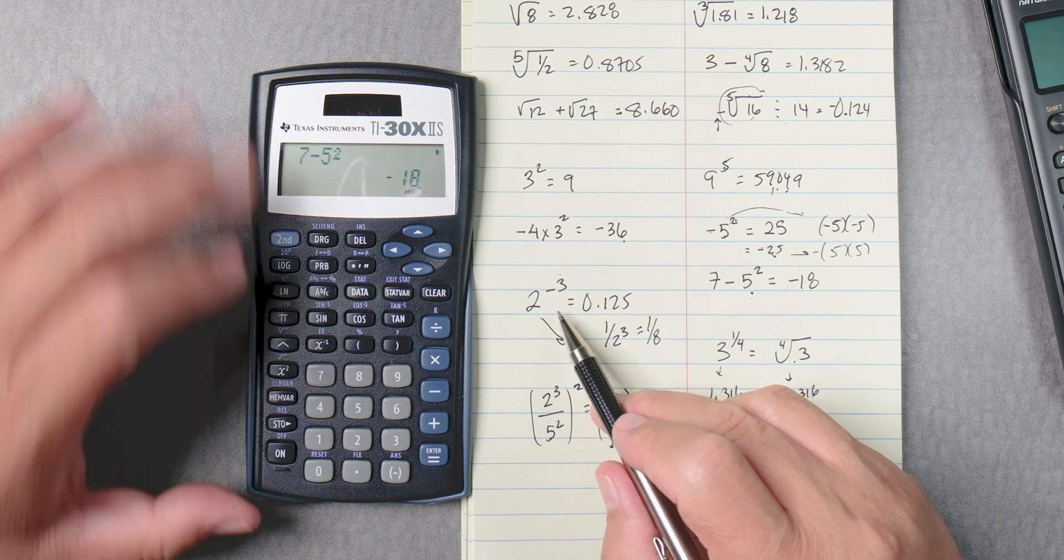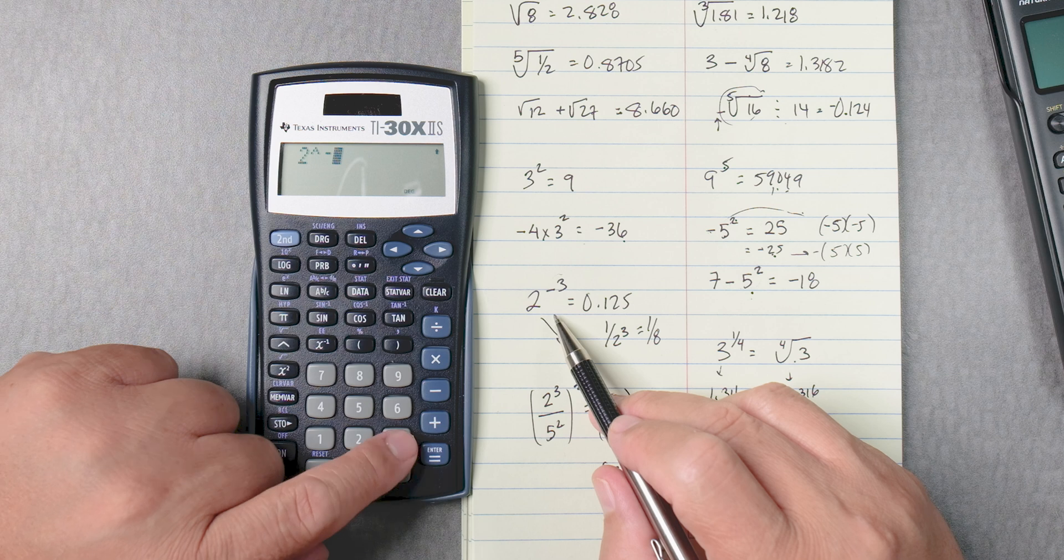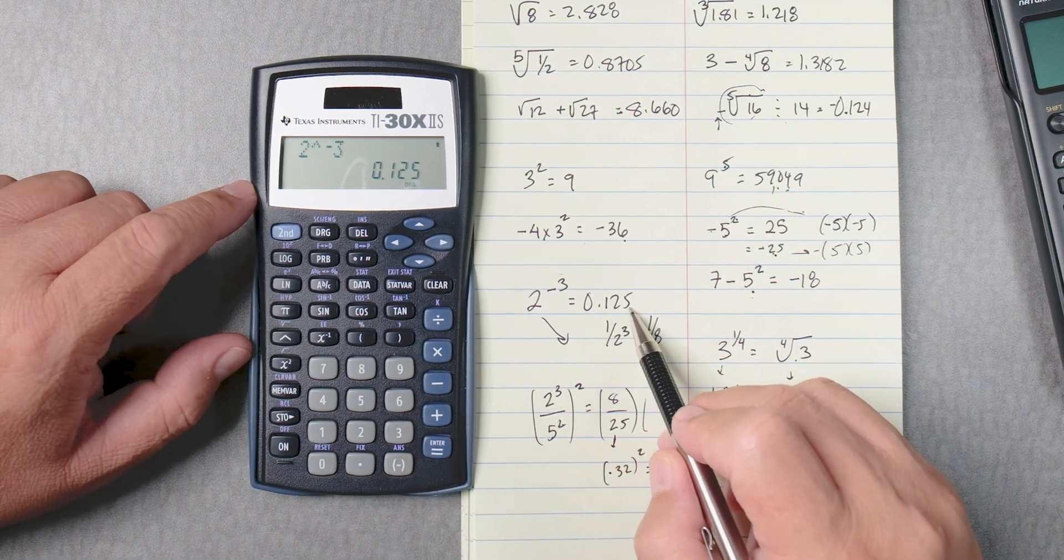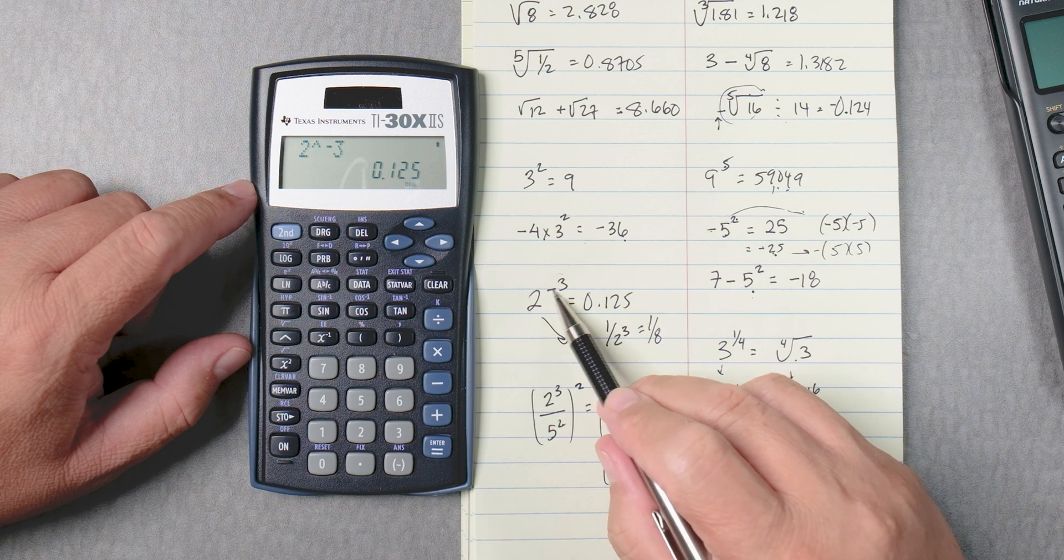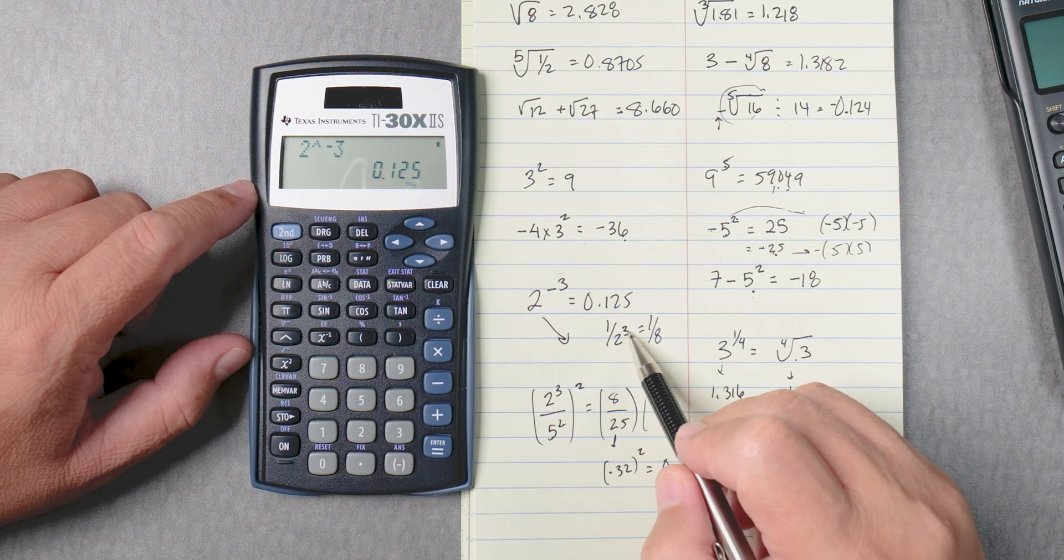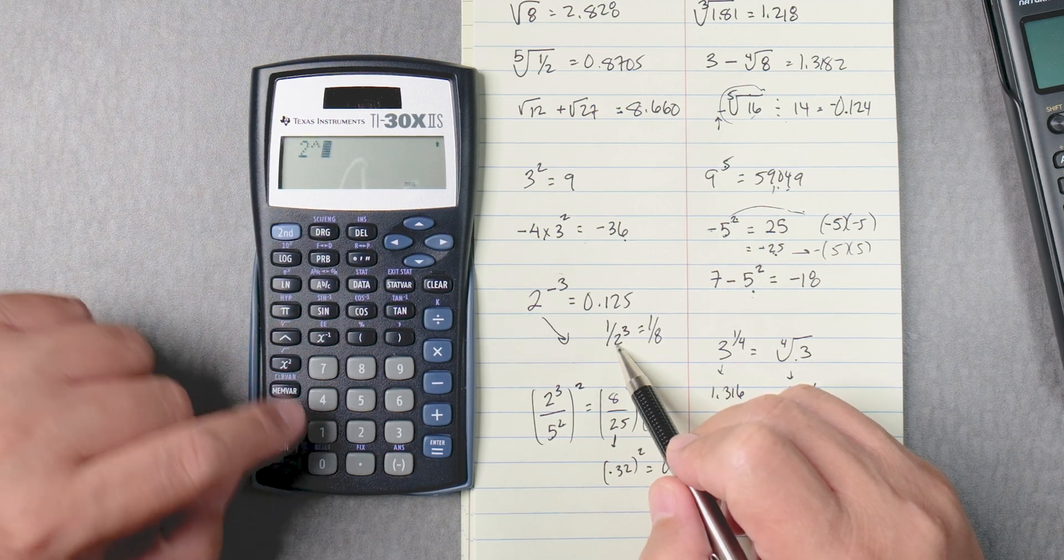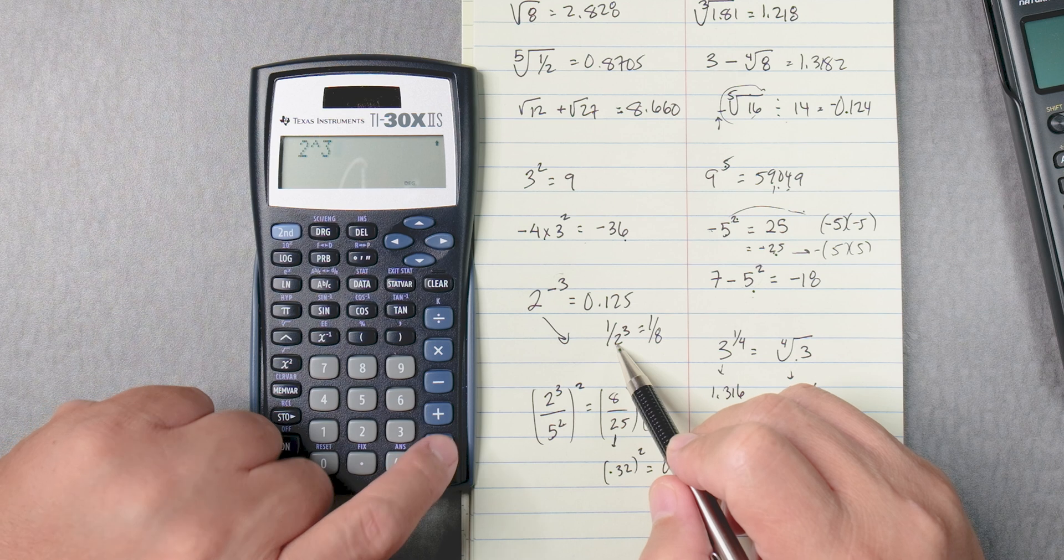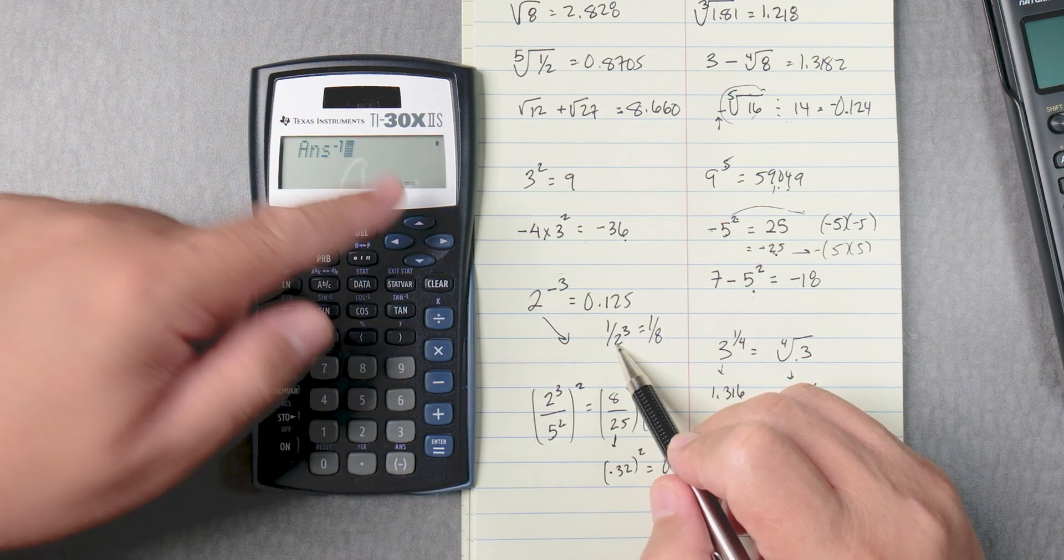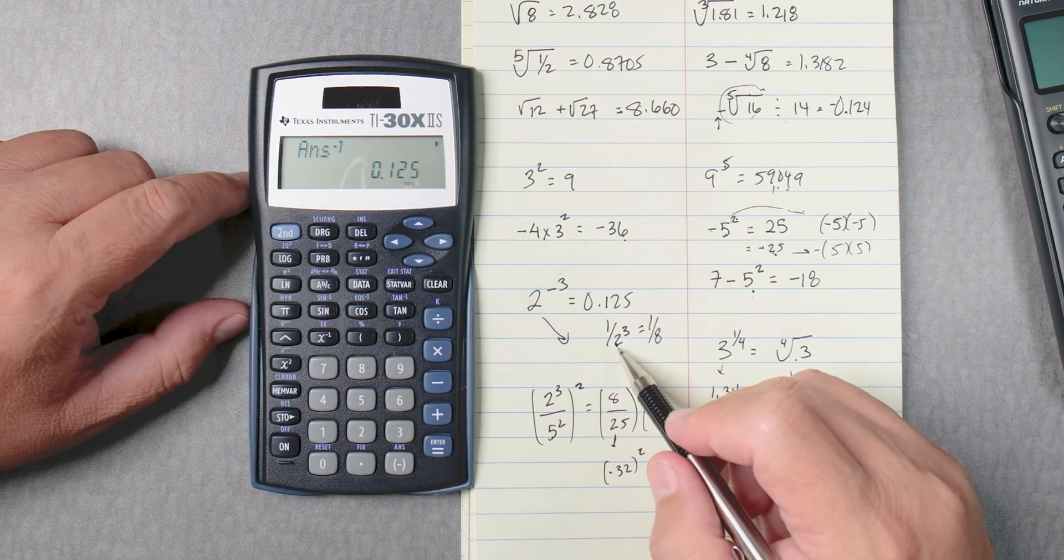So here we go, 2 caret, negative 3, okay, enter, 0.125. Now, negative 3, 2 to the negative 3 is really 1 over 2 to the third. So we could say 2, right, to the power of 3 equals, and then we could do x to the minus 1. And we could take that answer and then invert it, take the reciprocal.